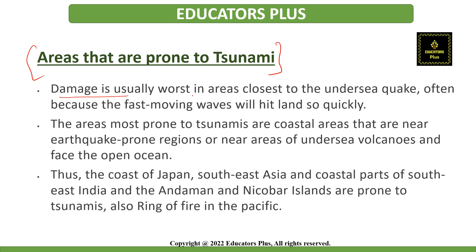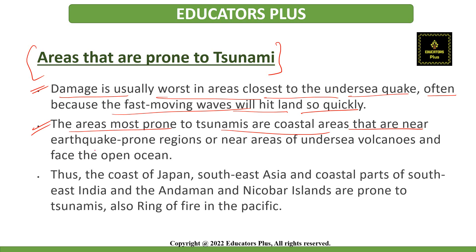Let's discuss which areas are prone to tsunami. Damage is usually worse in areas closest to the undersea quake because fast-moving waves hit land very quickly. Areas more prone to tsunamis are coastal areas near earthquake-prone regions or near areas of undersea volcanoes that face the open sea.